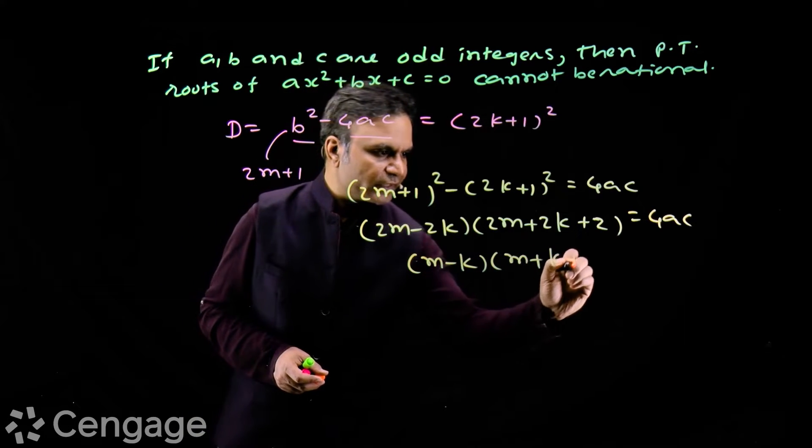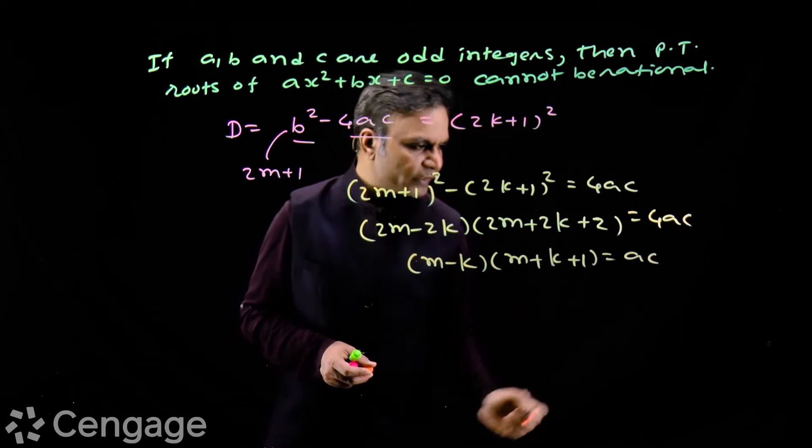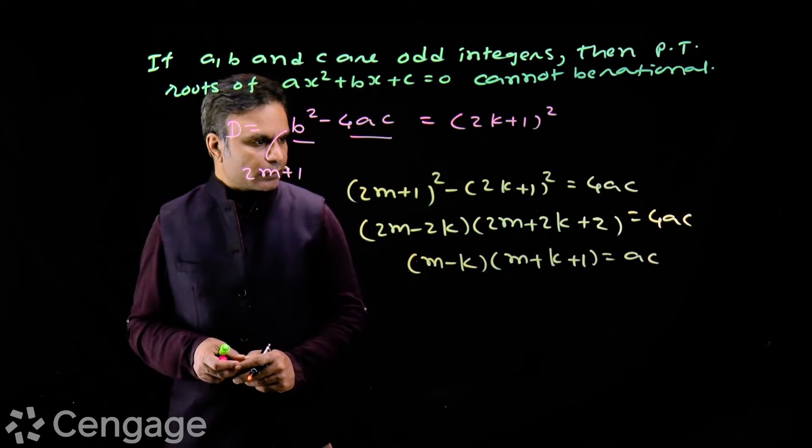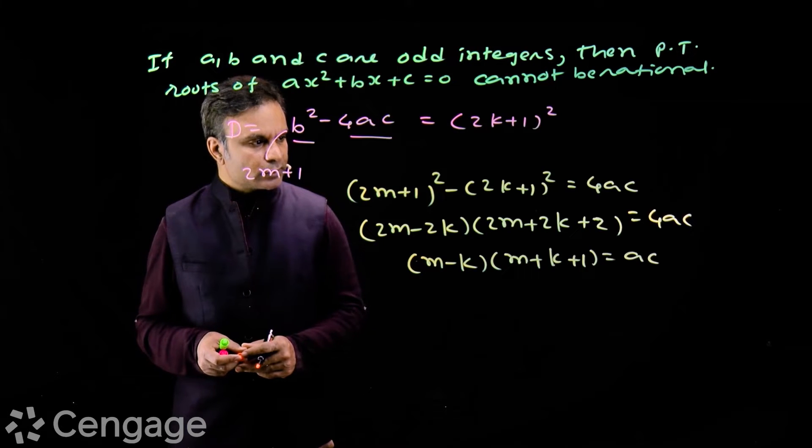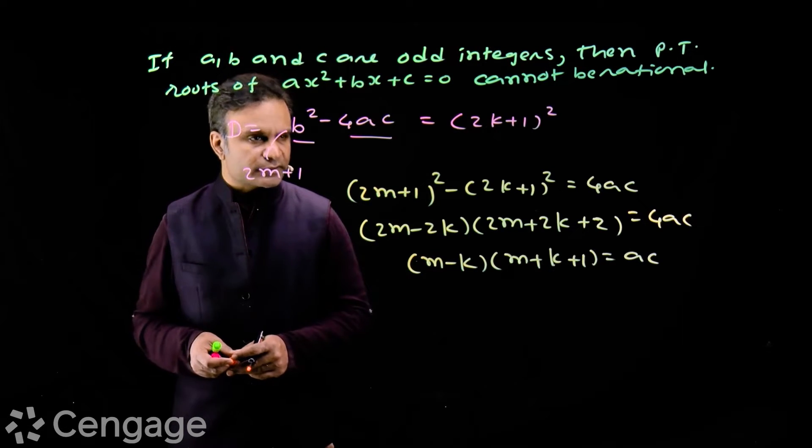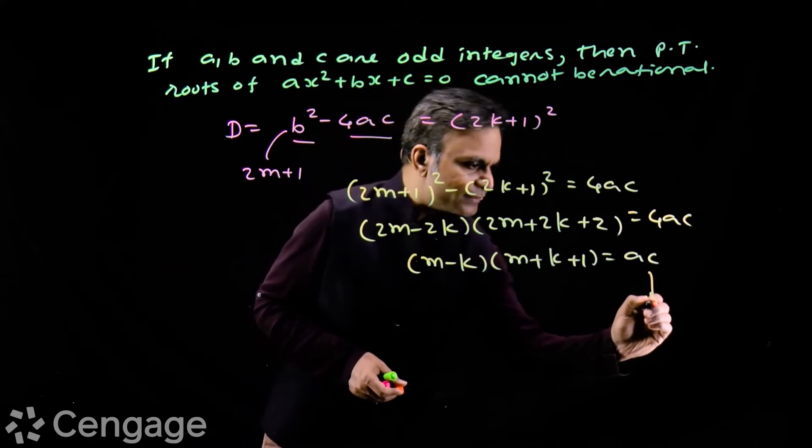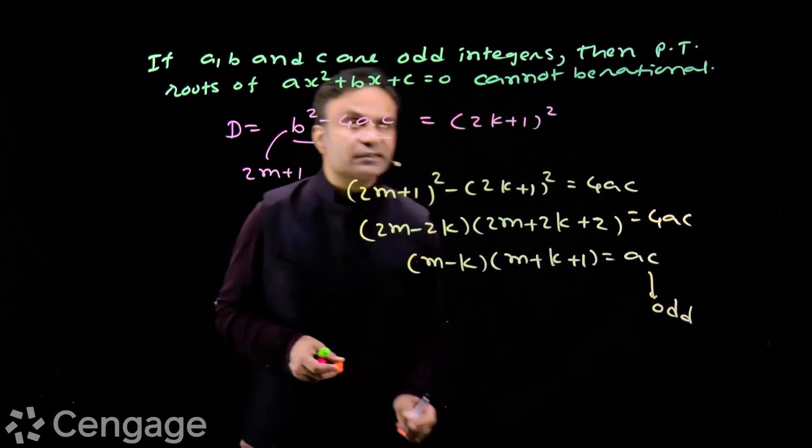Now here we can prove contradiction by comparing both sides for the kind of integers. ac is always odd integer because it is given that a, b, and c are odd integers.